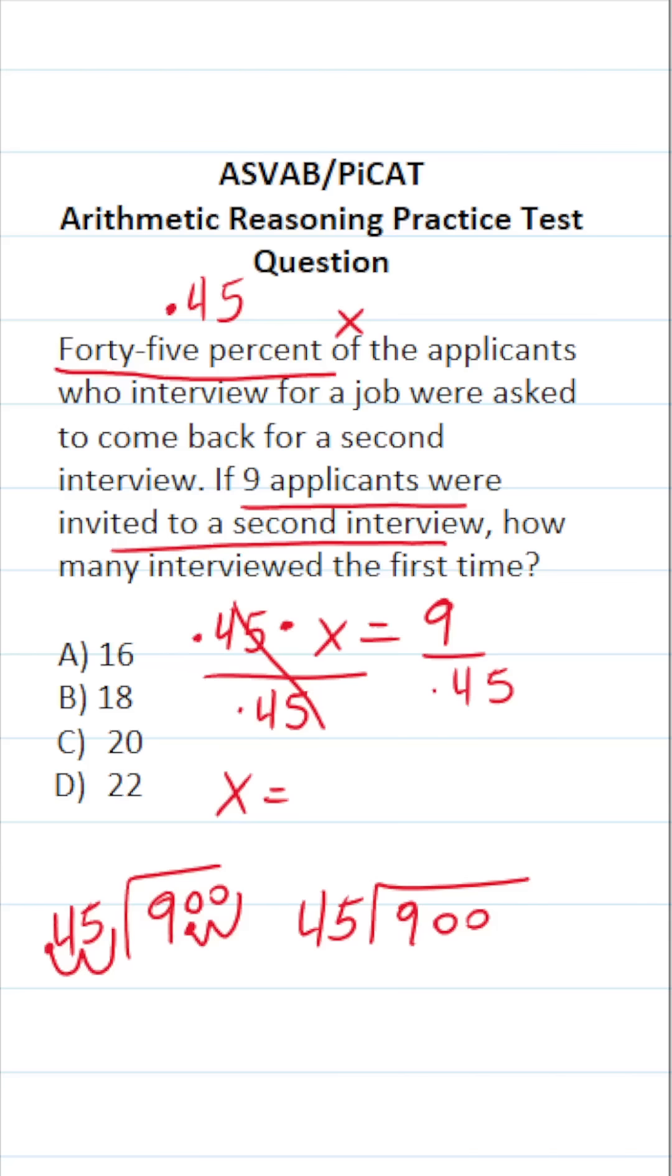You should know that 45 times two is 90. Therefore, 45 times 20 is going to be exactly 900 with no remainder. In other words, X is 20. 20 people were invited to the first interview. So this one is going to be C.